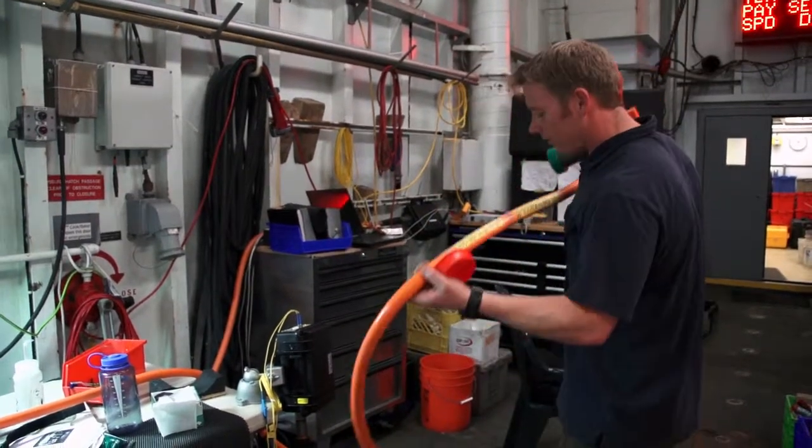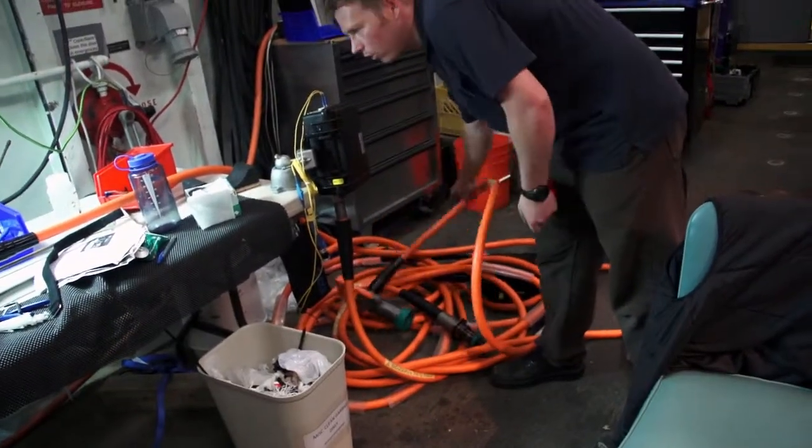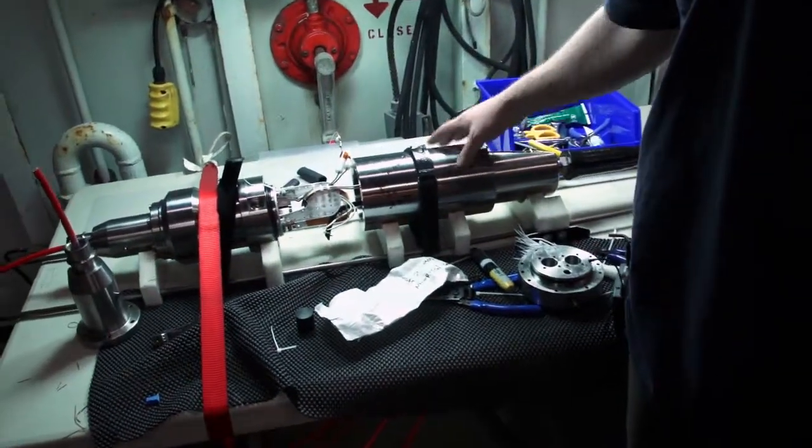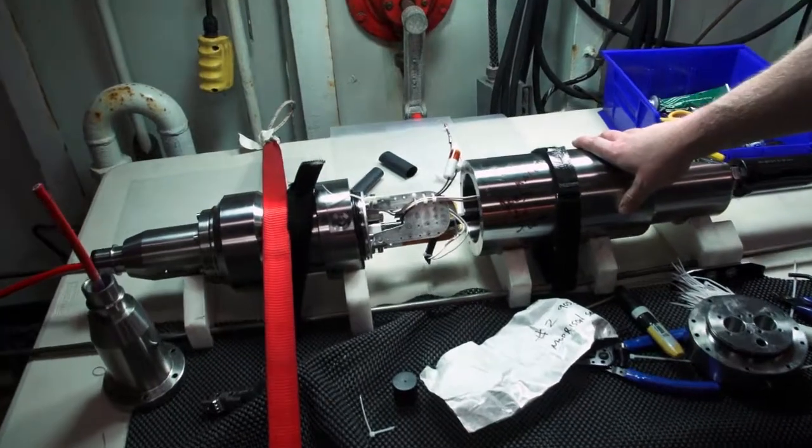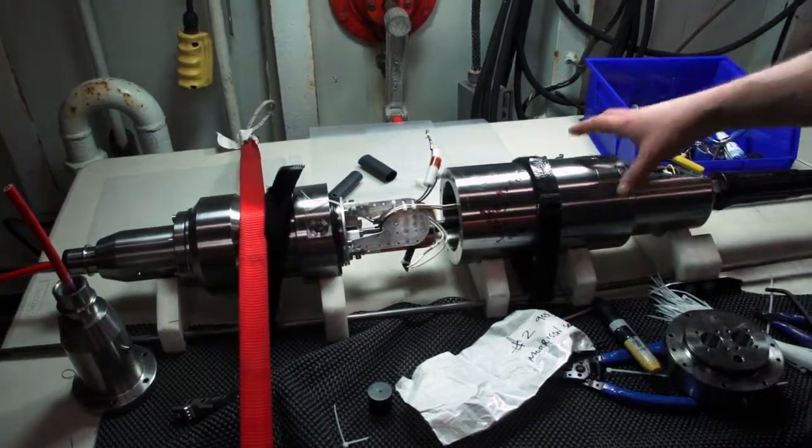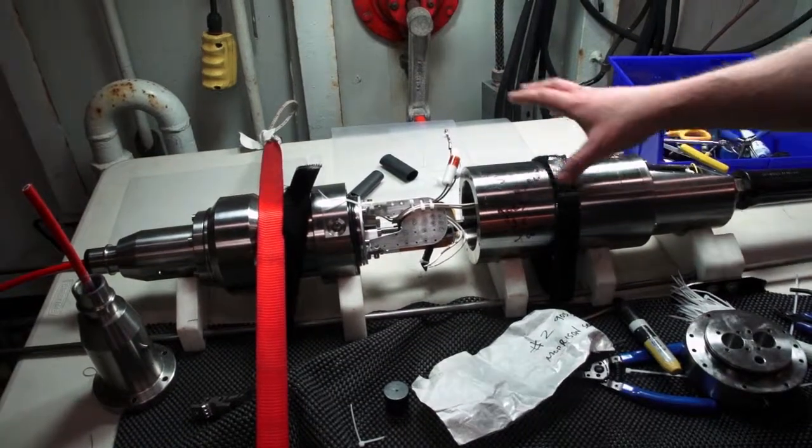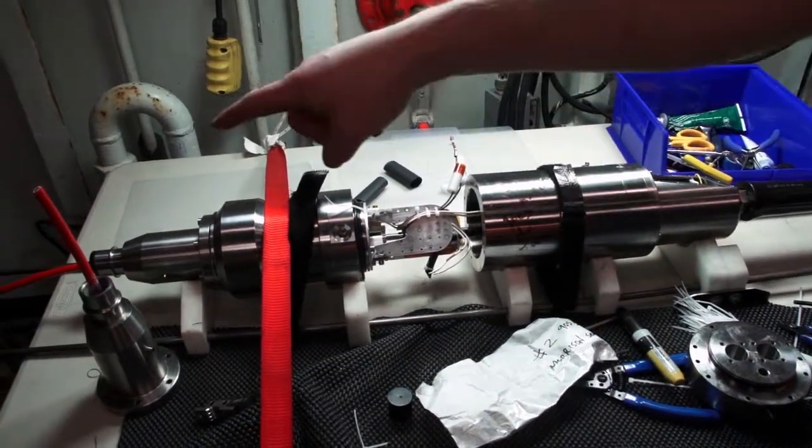We have an orange oily hose that's pressure balanced and oil filled, going into a termination can where we have the electrical conductors for power and two fibers. The fibers are fusion spliced and the conductors are crimped onto the main cable.